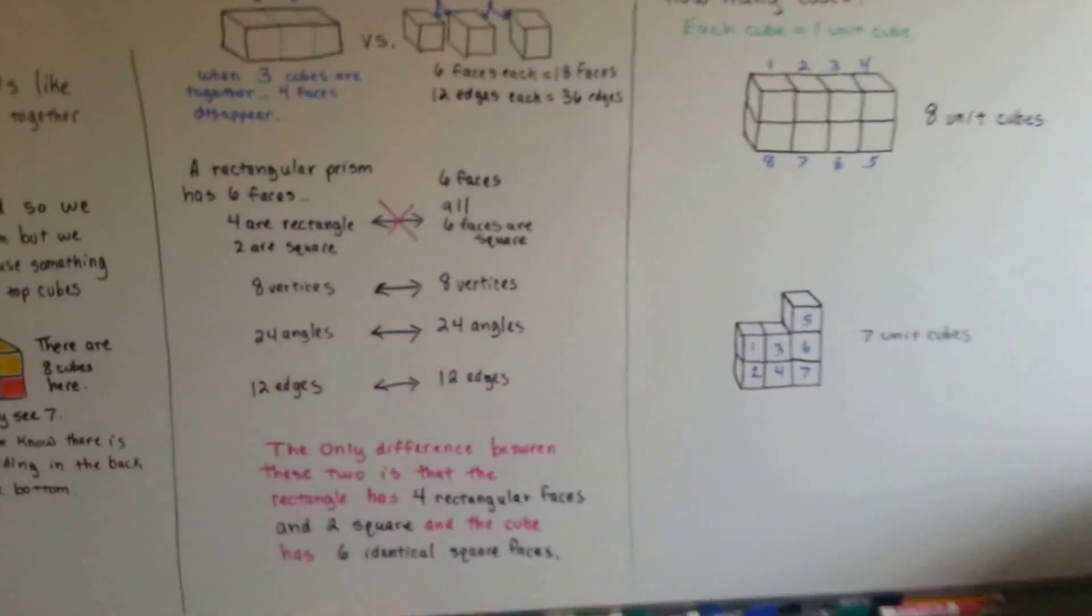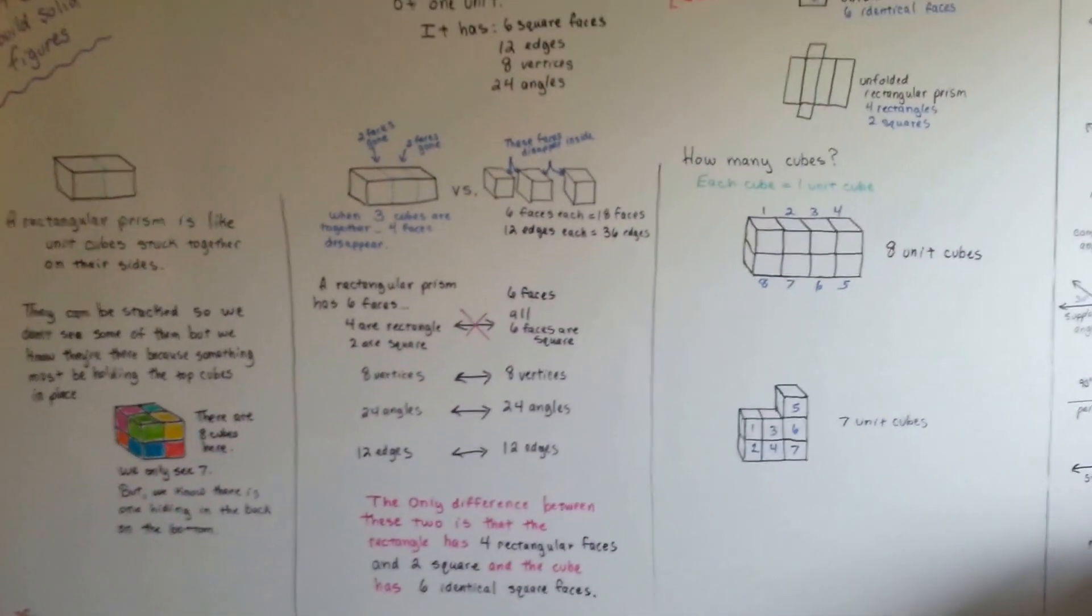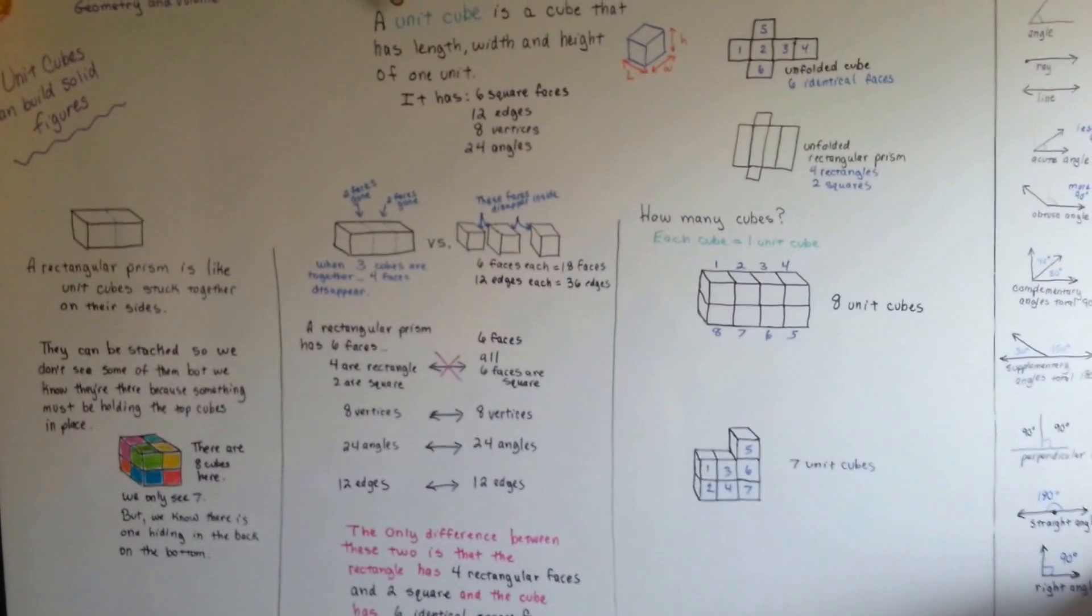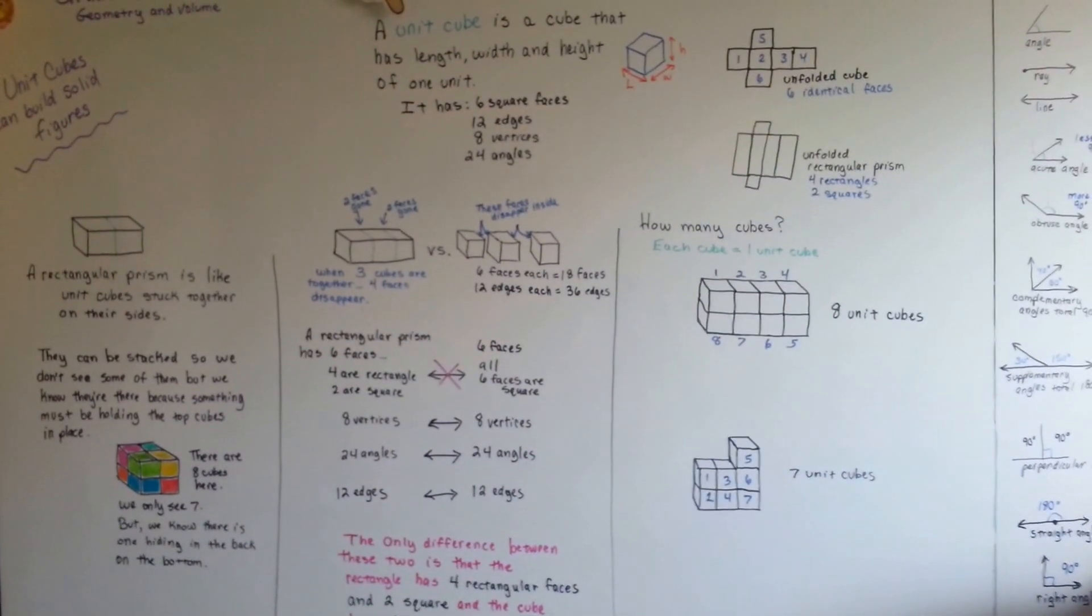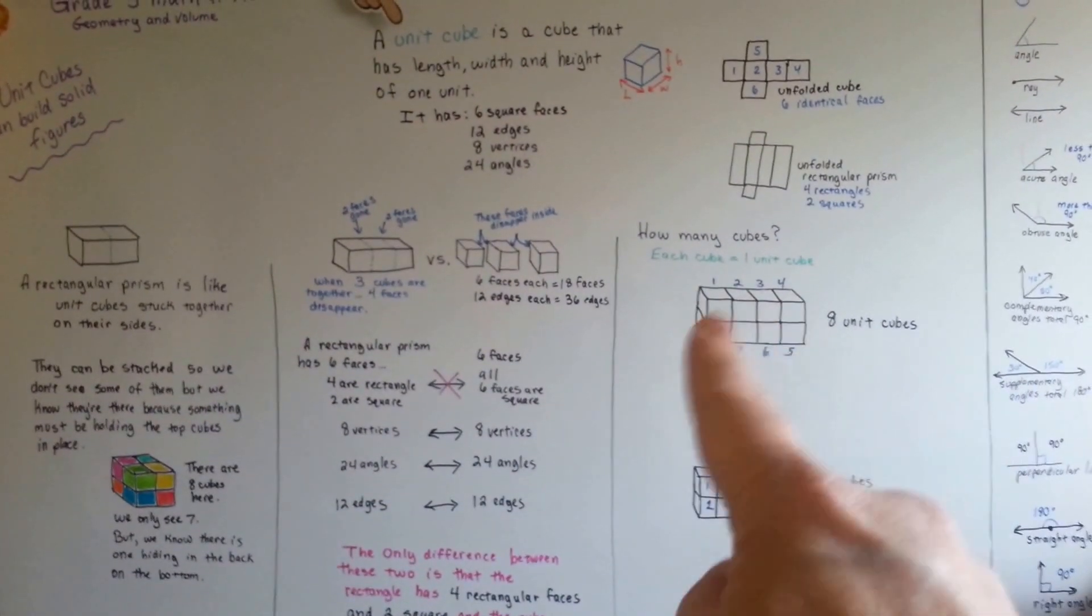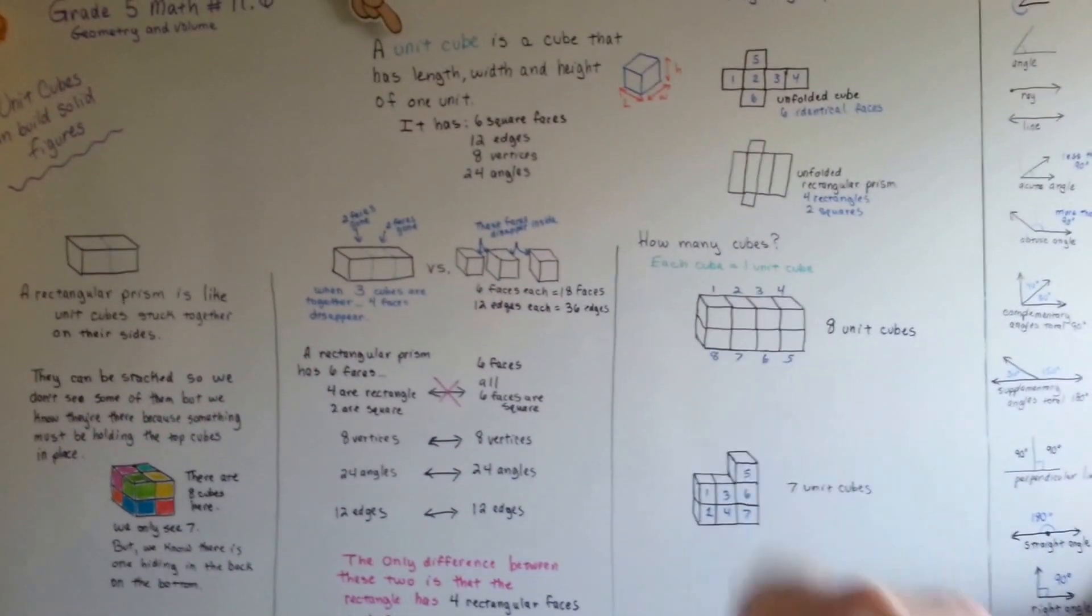So those are unit cubes. You're going to see lots of them stacked together, and you're going to have to count them to figure out how many there are, and each one, when they're stacked together like this, these eight unit cubes make a rectangular prism.